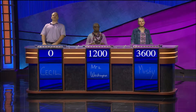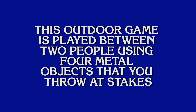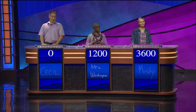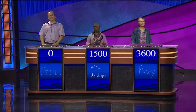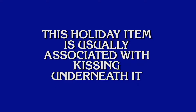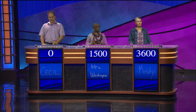O Before E for $300, please. This outdoor game is played between two people using four metal objects that you throw at stakes. Miss Washington: What is horseshoes? Correct. O Before E for $200: This holiday item is usually associated with kissing underneath it. What is mistletoe? Correct.